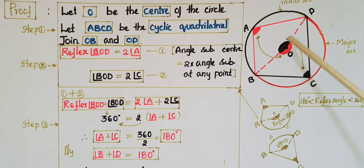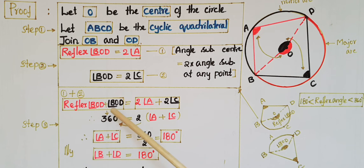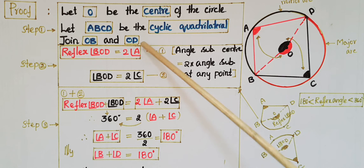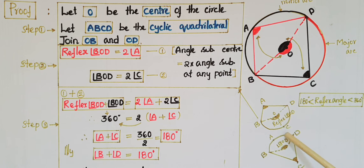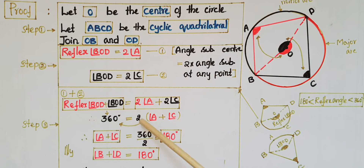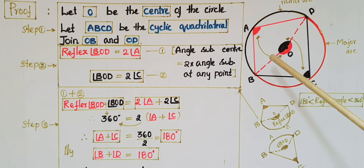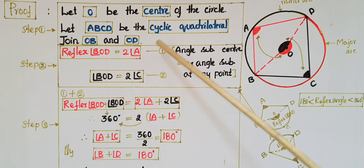From equations one and two, adding reflex angle BOD and angle BOD: reflex angle BOD plus angle BOD equals two angle A plus two angle C. These two angles together form 360 degrees, so 360 equals two times (angle A plus angle C). Therefore angle A plus angle C equals 360 divided by 2, which is 180 degrees.